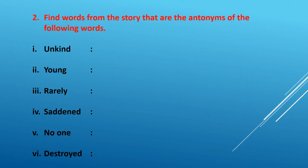The next word wall question: find words from the story that are antonyms of the following words. The antonym of unkind is kind. The antonym of young is old. The antonym of rarely is frequently. The antonym of saddened is cheered up. The antonym of no one is everyone. The antonym of destroyed is built.